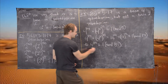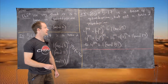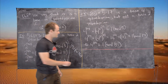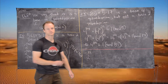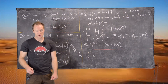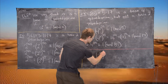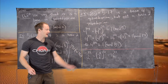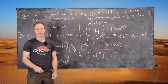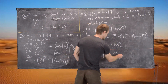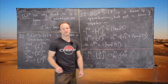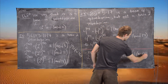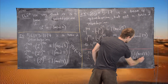Now let's show why 85 is not a base-2 pseudoprime — let's see what goes wrong. We look at 2 to the 84, which equals 2 to the 4, all to the power 21, which is 16 to the 21. Again, 16 is congruent to negative 1 mod 17, so we have negative 1 to the 21 mod 17. But negative 1 raised to an odd power is clearly negative 1 mod 17, which is 16 mod 17.